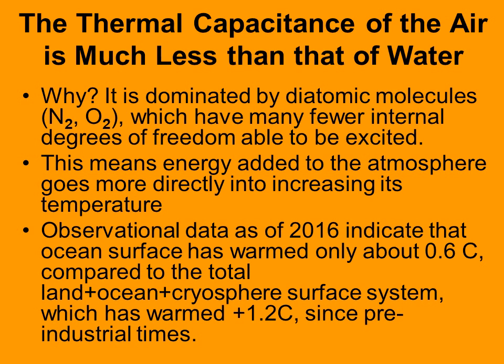Observational data as of 2016 indicate that the ocean surface has warmed by only about 0.6°C. That's quite a bit less than the total land-ocean and cryosphere surface temperature warming, which is about 1.2°C as of 2016 — now up closer to 1.4°C. The oceans have warmed about half of what the land and sea average have done.